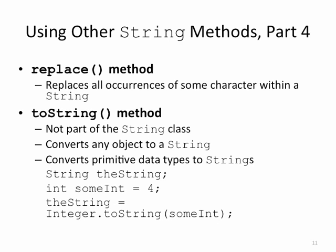Here we're looking at an example using the wrapper class Integer. Let's say we have int sumInt equals 4, so we have an integer variable equal to 4. The string equals Integer.toString(sumInt).